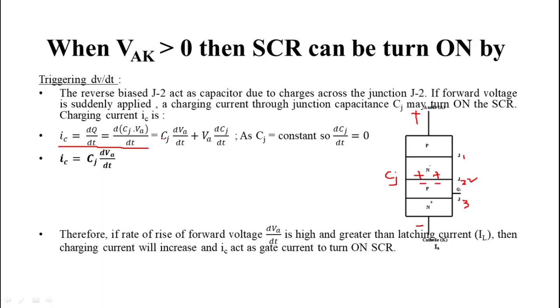And that is equal to CJ dVA by dt plus VA dCJ by dt. Here the junction capacitance CJ is constant, that's why its differentiation is zero. Putting this, we get IC is equal to CJ dVA by dt.